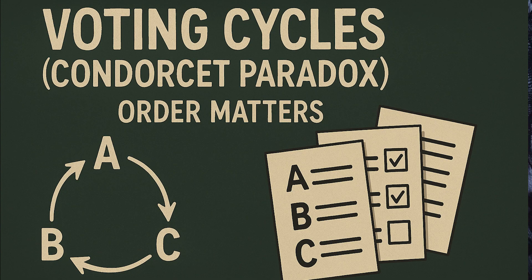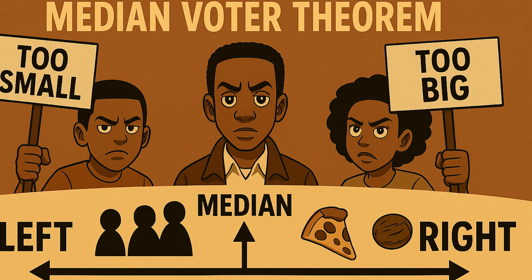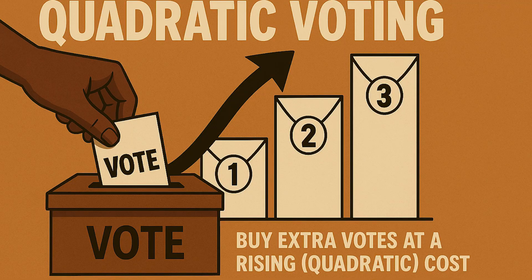The paradox of voting: pairwise majority votes can cycle — a group can prefer A over B, B over C, and C over A, with no stable best choice. Outcomes can depend on the order of votes, not true underlying preferences. Under majority rule with stable preferences, the median voter often determines the outcome, explaining why policy gravitates toward the center. Quadratic voting lets people buy votes at rising quadratic costs to express intensity of preference, potentially reducing inefficient outcomes, though it's rarely used in practice.